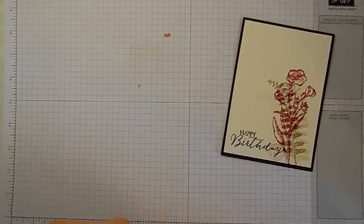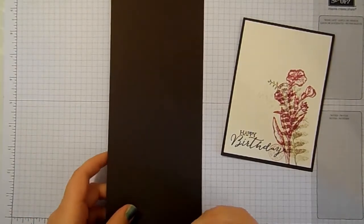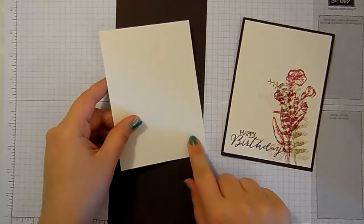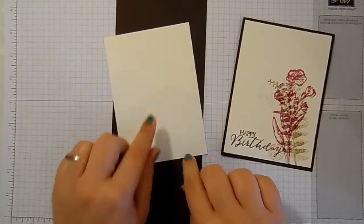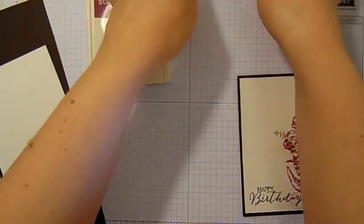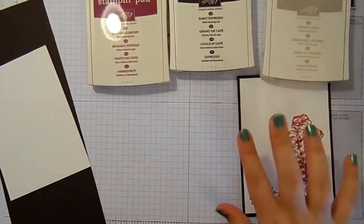I've also got a piece of early espresso cardstock, which is A4 cut in half, and a piece of watercolor paper, and three ink pads: Rich Razzleberry, early espresso and Sahara sand.